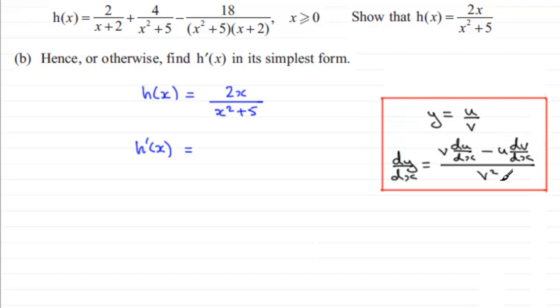Okay it's given with y here but it makes no difference, y is our h(x). So using the quotient rule, essentially v is the denominator so we take the denominator of our fraction which is x squared plus 5